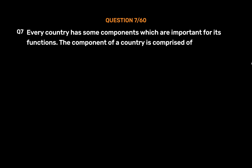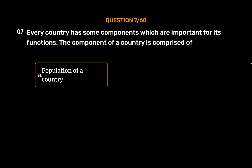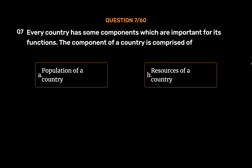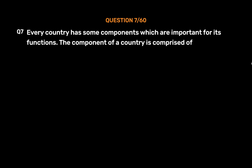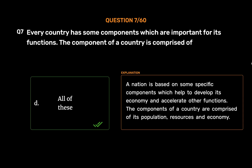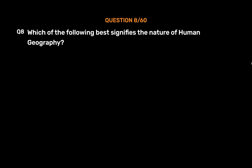Question number 7: Every country has some important components for its functions. The components of a country are comprised of — option A: population, option B: resources, option C: economy, option D: all of these. The correct answer is option D, all of these. A nation is based on specific components which help develop its economy and accelerate other functions. The components of a country are comprised of its population, resources, and economy.